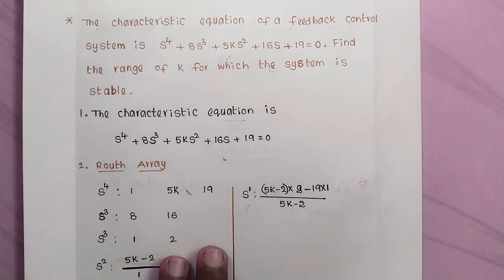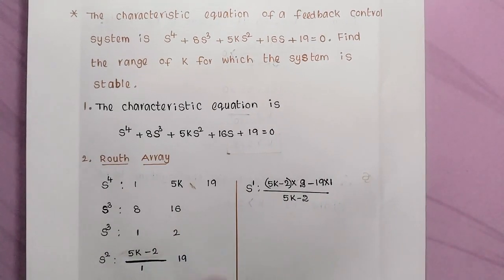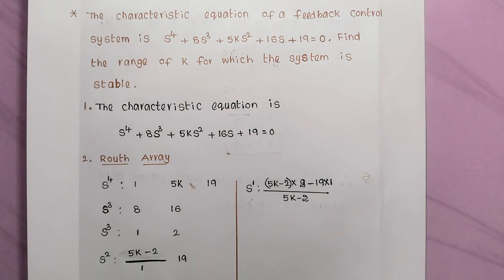First step: writing the characteristic equation. The given characteristic equation is s⁴ + 8s³ + 5ks² + 16s + 19 = 0.